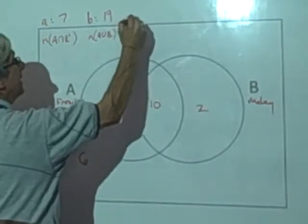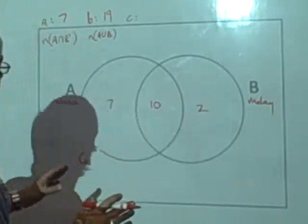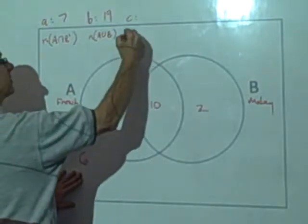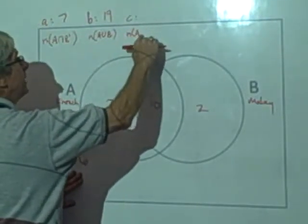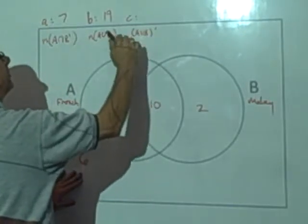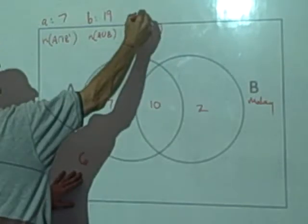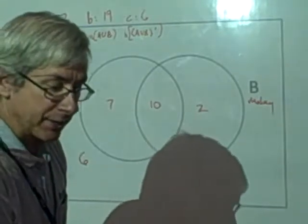All right. What about C? In C, they asked, how many do not study either subject? How many are in the complement? How many are in the complement? Maybe I should put my cardinal number on the indicator out here. How many are in the complement? Well, we already figured that out. That's six. Six don't study any language.